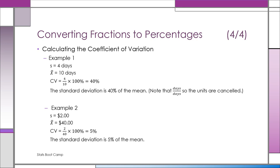Example 1: the standard deviation was 4 days, the sample mean was 10 days, and the coefficient of variation is 4 over 10 times 100%, or 40%. In other words, the standard deviation is 40% of the mean.